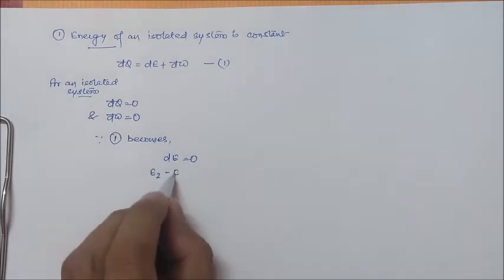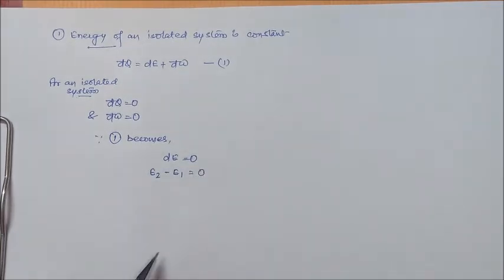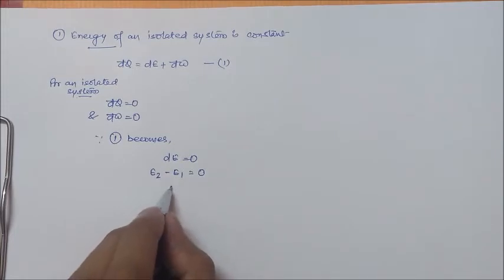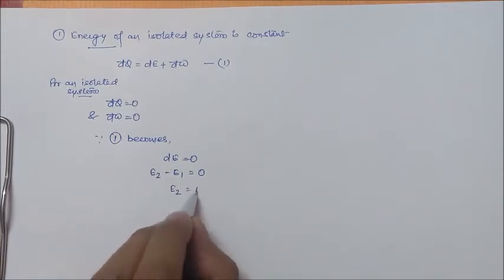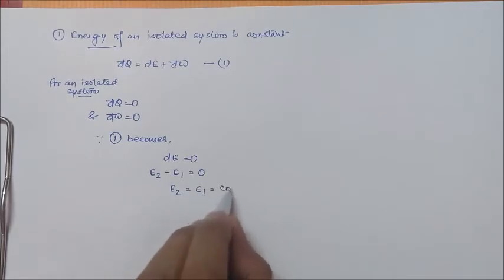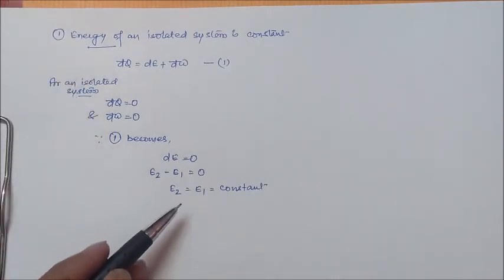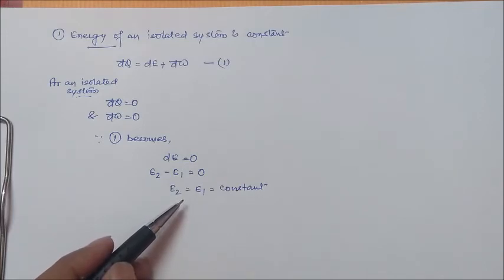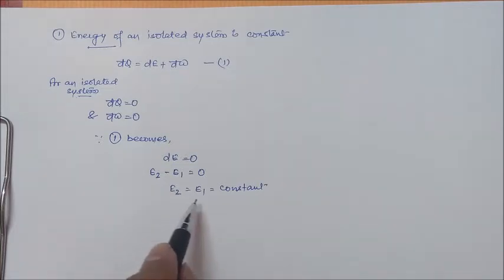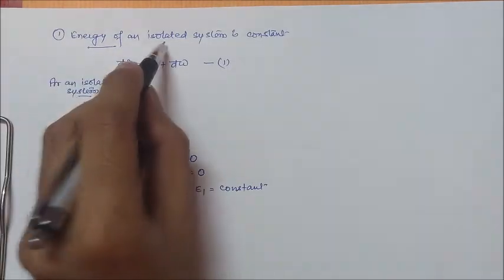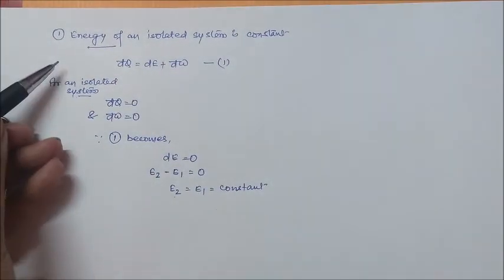E2 minus E1 is 0, or E2 is equal to E1, which is equal to constant. It means energy for an isolated system is same for any state during a process. So we got to know that energy of an isolated system is constant from this.